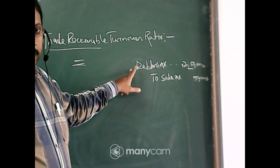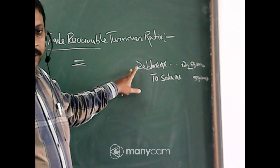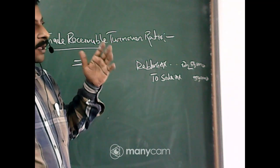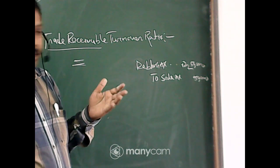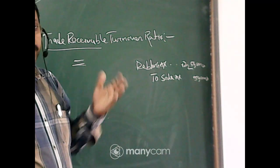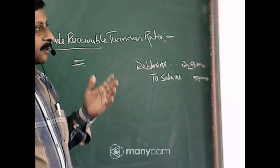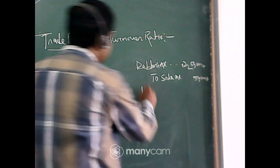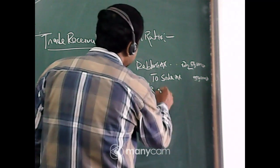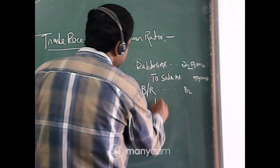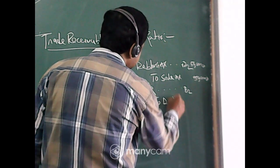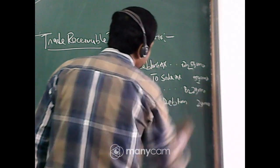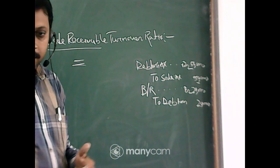Now, some debtors are not very reliable — you may not collect the cash in time. For example, a debtor has taken credit for two months and is supposed to pay back after two months. But from past experience, some debtors say they will pay back in time but do not. In that case, you issue a bill receivable. The journal entry is: bill receivable account debit to debtors account.